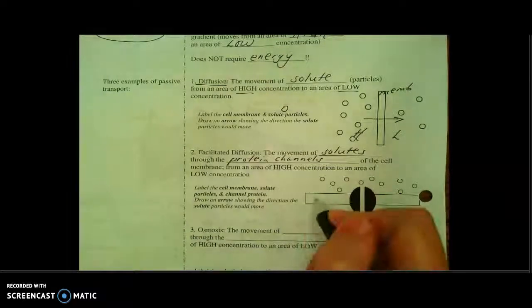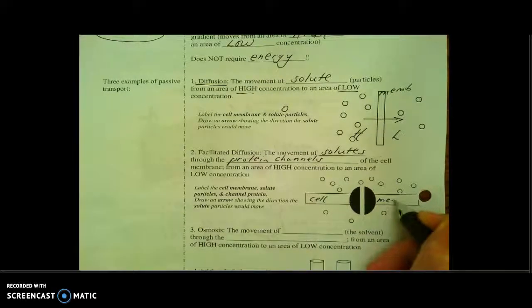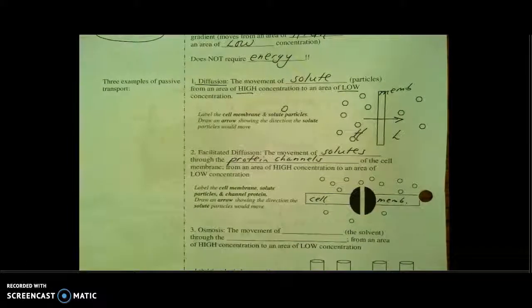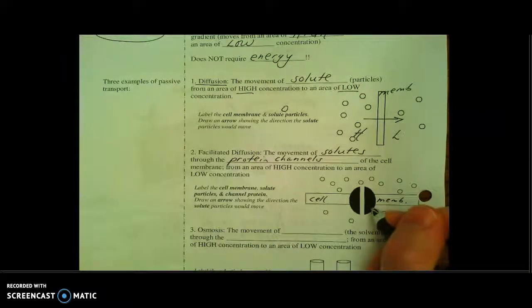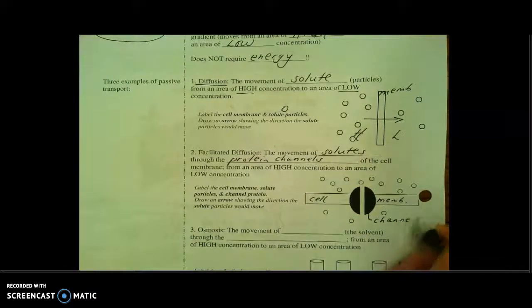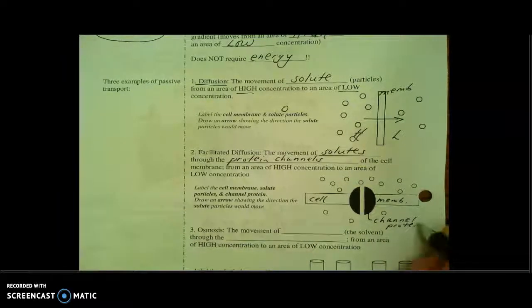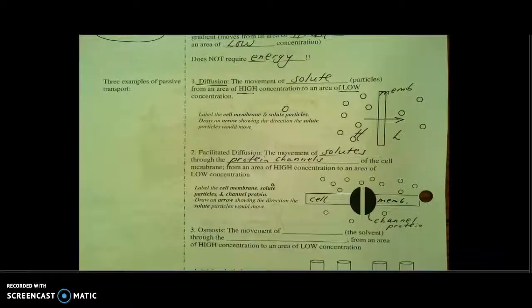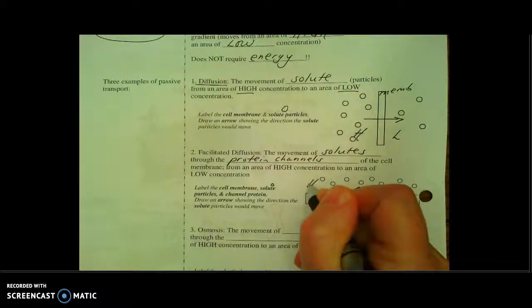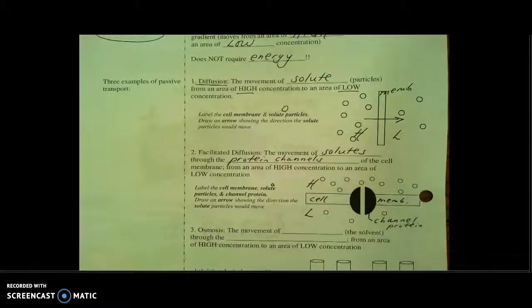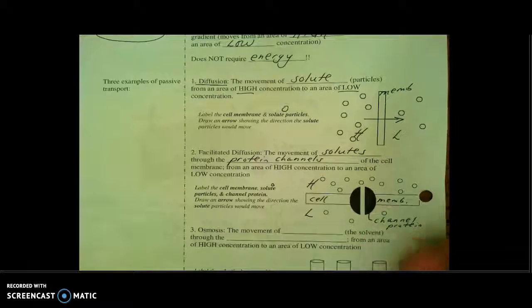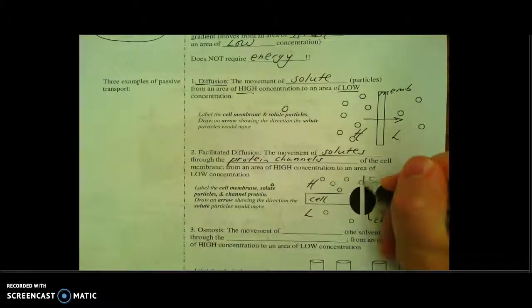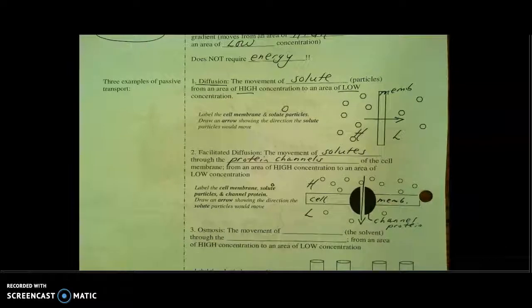Now, if we check out this picture, we've got the cell membrane dividing the two sides. And this time, we've got this helper channel protein, or protein channel. Now we need to figure out the direction of flow. Again, we know it's high to low. So let's pick the side that has more of these solute particles. Good. High here. Low here. High to low. Go with the flow. Let's draw that arrow showing the direction of those solute particles.